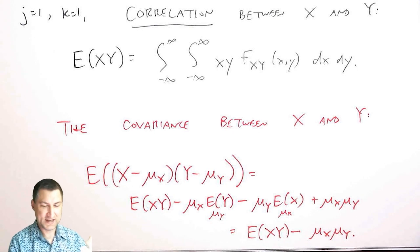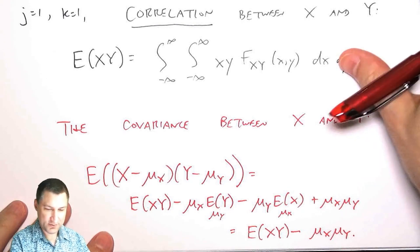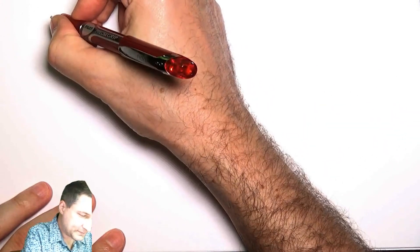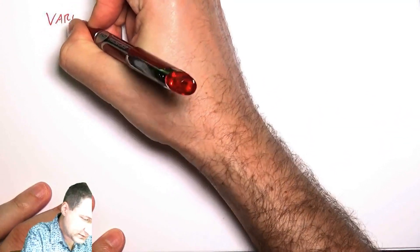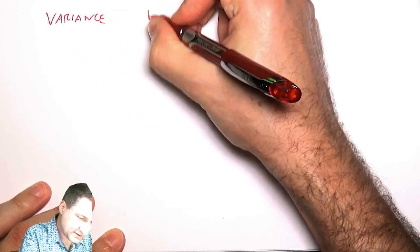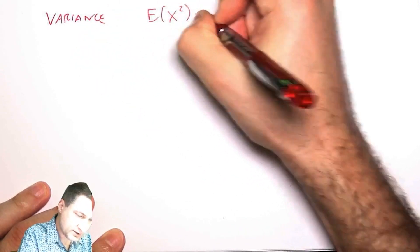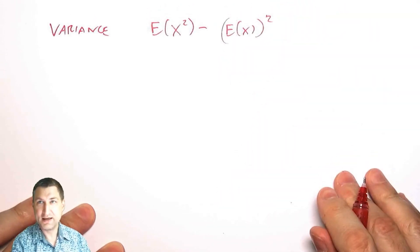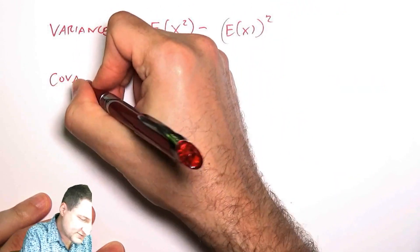And actually, this kind of makes sense because, remember that we defined the variance of one random variable as basically the expected value of X squared minus the expected value of X all squared. Now, the same thing is true here. The covariance, if I think about putting in both, you know, if I just have Y equals X, then I get exactly the same thing.